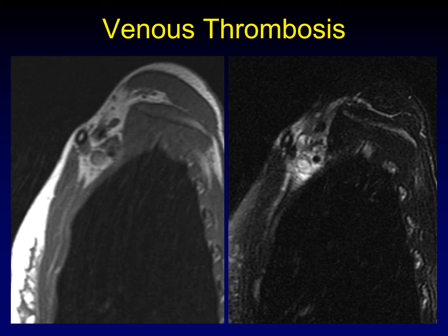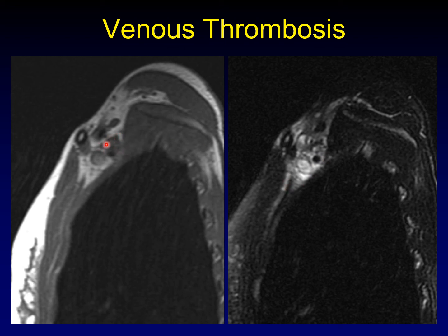Venous thrombosis: on a T1-weighted sequence, there's no flow void in the subclavian vein. MRI is not great at distinguishing slow flow versus occlusion, so be wary of that bright signal. This one is an occluded subclavian vein, and on T2-weighted sequences not only is the vein itself bright, but there's a lot of surrounding inflammation. You might say it looks like a hematoma sitting on the brachial plexus — and usually venous thrombosis comes from trauma with an associated hematoma. Whether it's the hematoma or the venous thrombosis itself, venous thrombosis in and of itself can cause a brachial plexopathy.